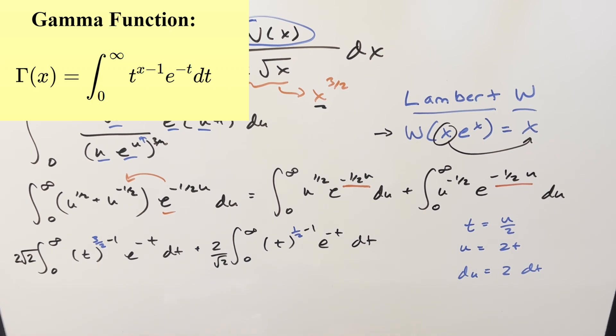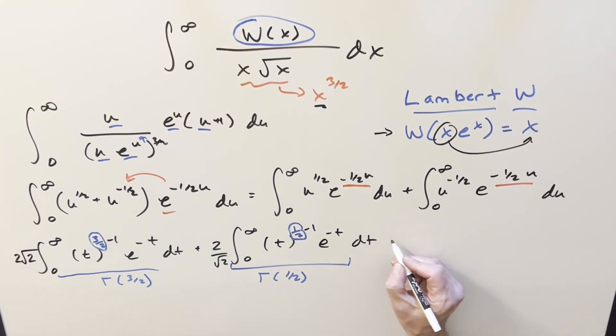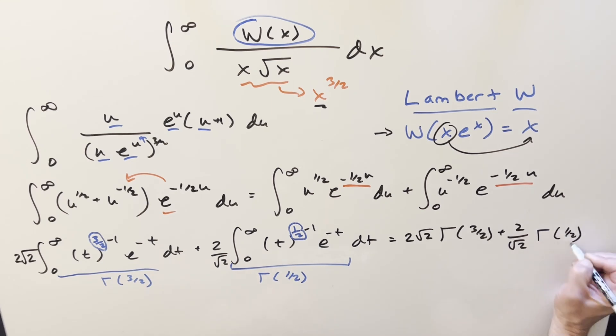For now what we have here, this is perfectly set up for the gamma function. This is going to be our input right here in blue. So this one, this whole integral is just going to be the same thing as gamma of three halves, just using the formula. And this one over here, the input is going to be right here. So this integral is going to be gamma of one half. So let's just multiply it out to see what we have. We're going to have this 2 square root of 2 in front times gamma of three halves plus 2 over square root of 2 times gamma of one half.